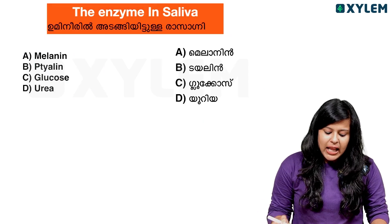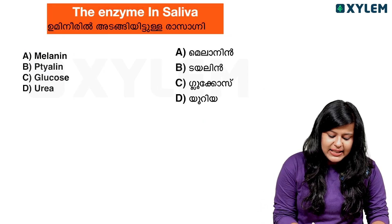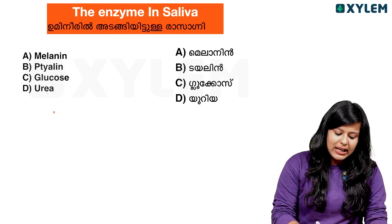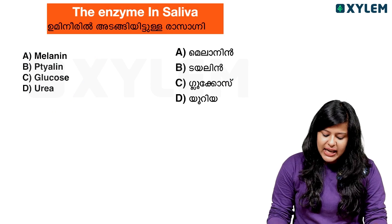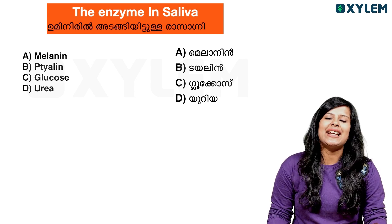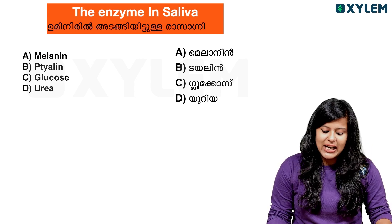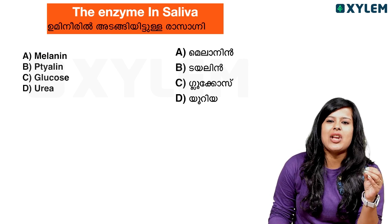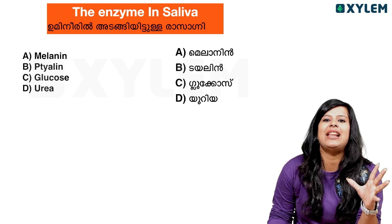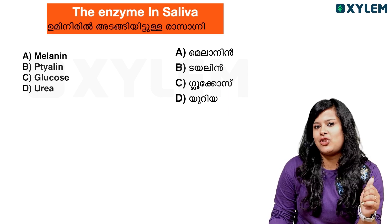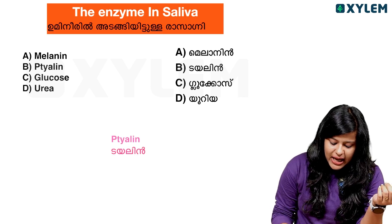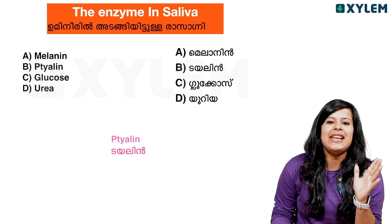What is the next question? The enzyme in saliva. The options are: Melanin, Tyaline, Glucose, Urea. So what is the answer? Tyaline. Tyaline is correct.